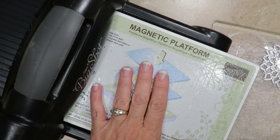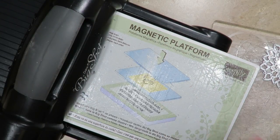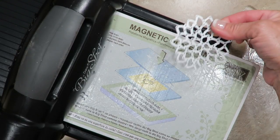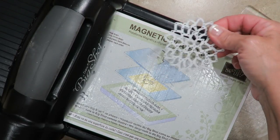I'm gonna bring in my Big Shot. I'm a big fan of using my magnetic platform when I'm using my framelits. It creates just a really great contact between the paper or in this case the window sheet when we're die cutting.